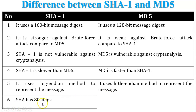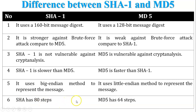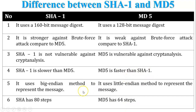SHA1 performs 80 steps and MD5 performs 64 steps. This means SHA1 is slower compared to MD5, and MD5 is faster compared to SHA1.